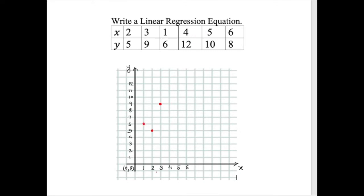When x is four, the response is twelve. When x is five, the response is ten. When x is six, the response is eight. So all six data points are now plotted on the scattergram.